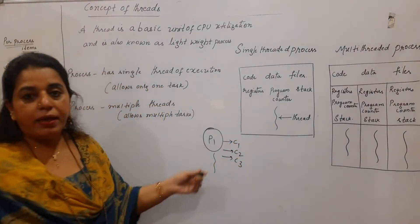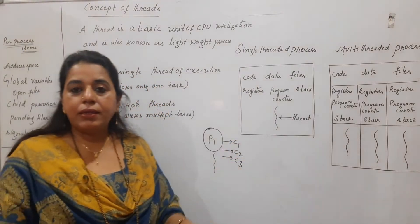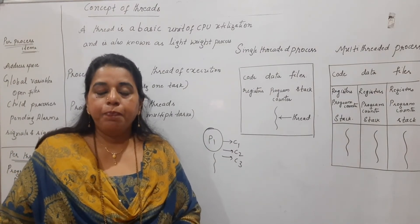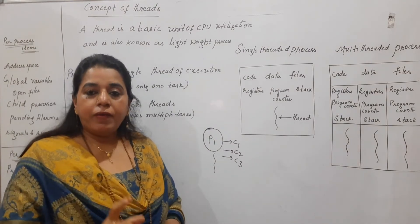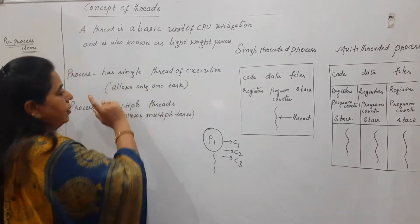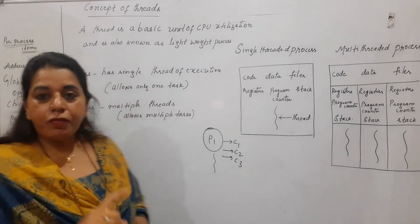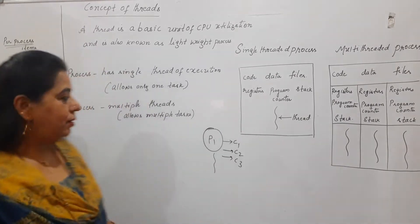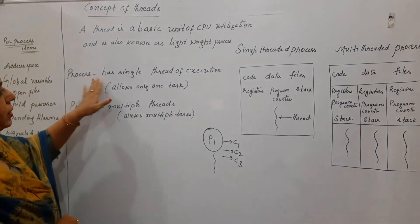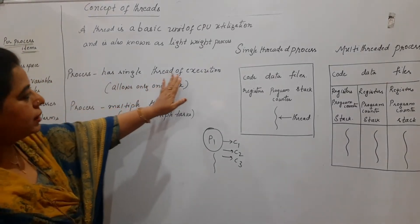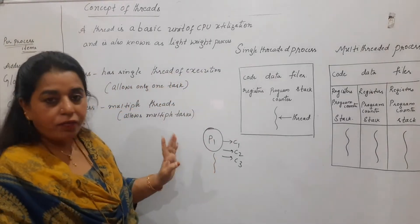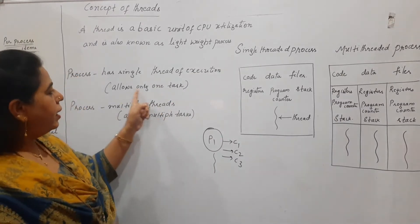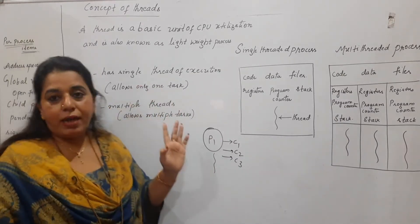So I am just giving one example — it has created several child processes to perform the related task. Now similarly, a thread also performs multiple tasks. A process has got a single thread of execution, meaning one single process allows only one task to be done.